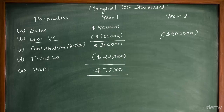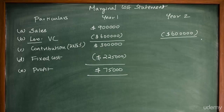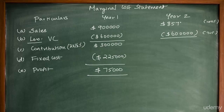In Year Two we know the variable cost but not sales. The PV ratio will become 30%, meaning variable cost represents 70% of sales (100% - 30% = 70%). So sales = six lakh divided by 70% = eight lakh fifty-seven thousand one hundred and forty-three dollars. Contribution = sales minus variable cost = eight lakh fifty-seven thousand one hundred forty-three minus six lakh = two lakh fifty-seven thousand one hundred and forty-three dollars.